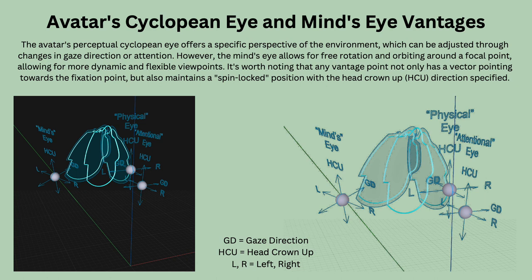In this diagram, GD stands for gaze direction, HCU stands for head crown up — which way the top of your head points — and then which way is right and left. The viewpoint needs orientational specificity in three dimensions. The gaze direction seems most important, but gaze-up and gaze-left/right also matter. This shows some different examples of that.